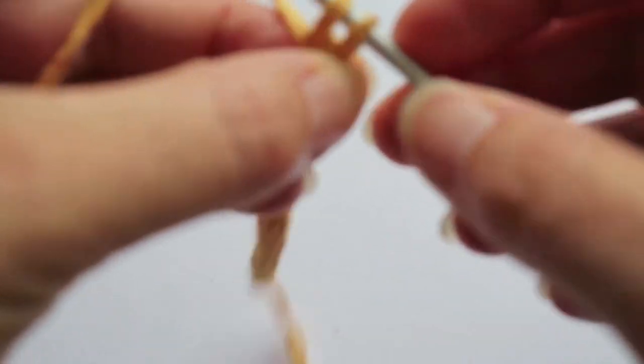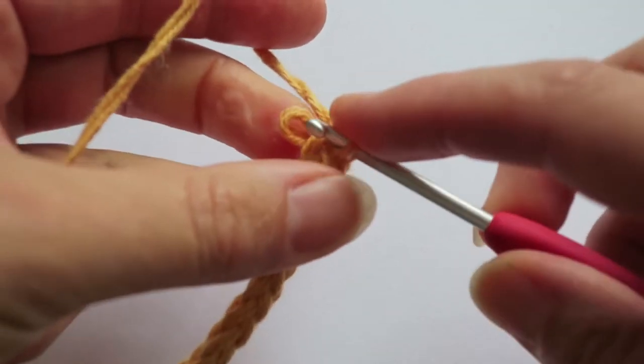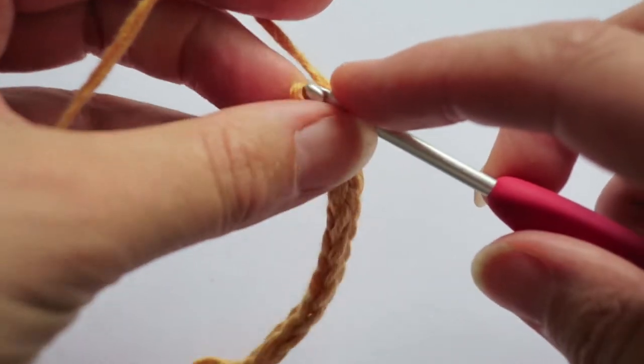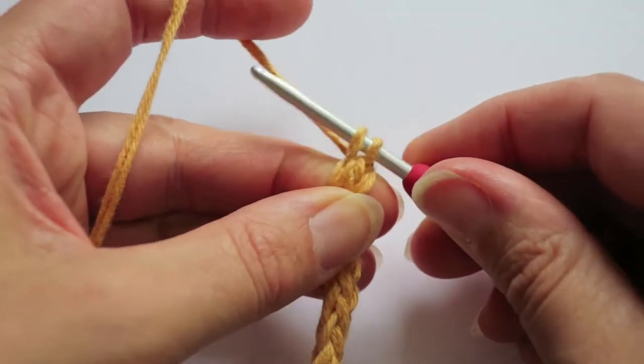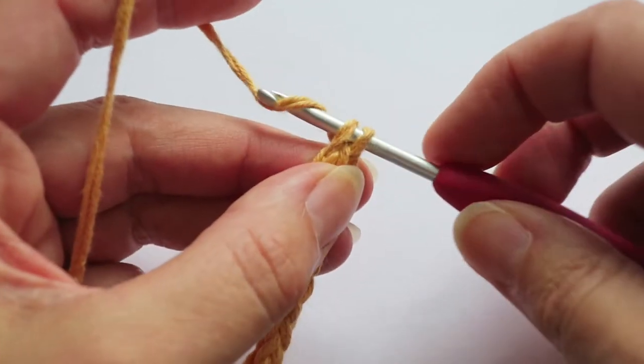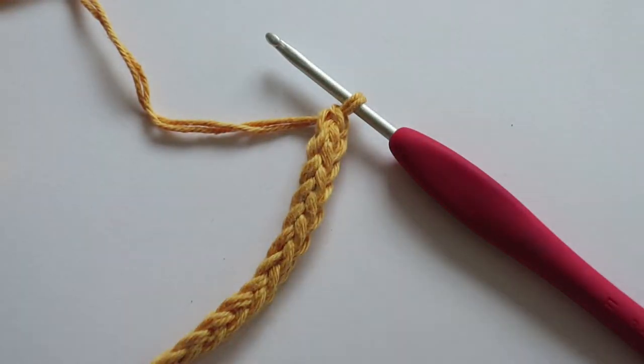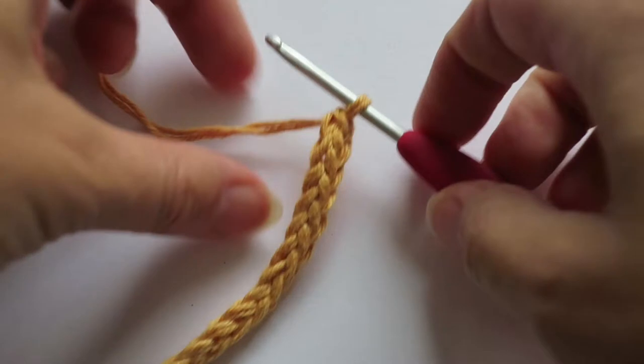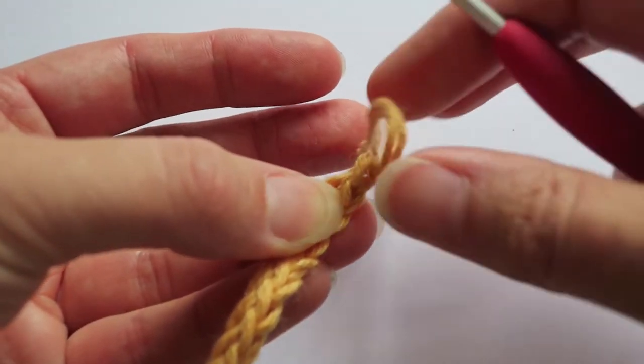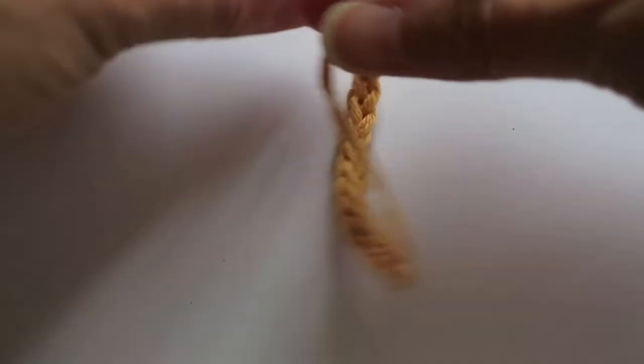So once you've got the desired number of stitches, it's pretty easy to fasten off. You basically just get to the point where you're just about to work the left loop and then you pull the yarn all the way through. And then cut the yarn and pull that end tail all the way through. Then that pretty much matches the start.